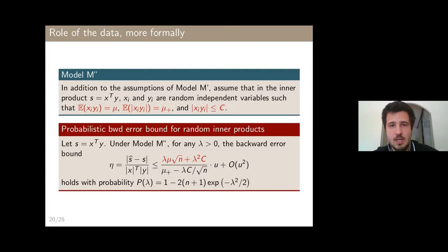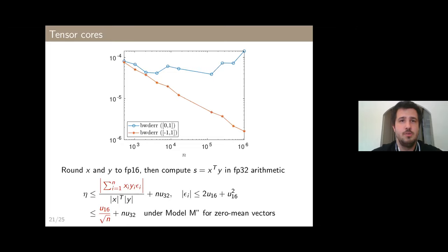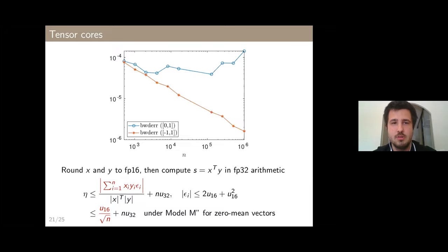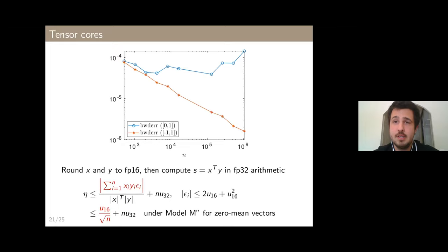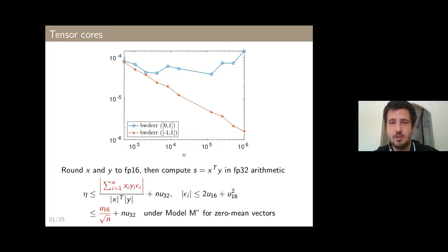This also explains the tensor cores result. By a similar analysis, we can express the backward error bound as a function of the elements of x and y, and prove that the backward error is smaller than the half-precision unit roundoff u_16 divided by sqrt(n), plus a term depending on single precision that grows linearly with n. This explains why for not-too-large n, where the first term dominates, we see a decreasing error. For very large n, the second term, which is n*u_32, would start to dominate and the error would go back up — but we didn't have computational resources to test that.